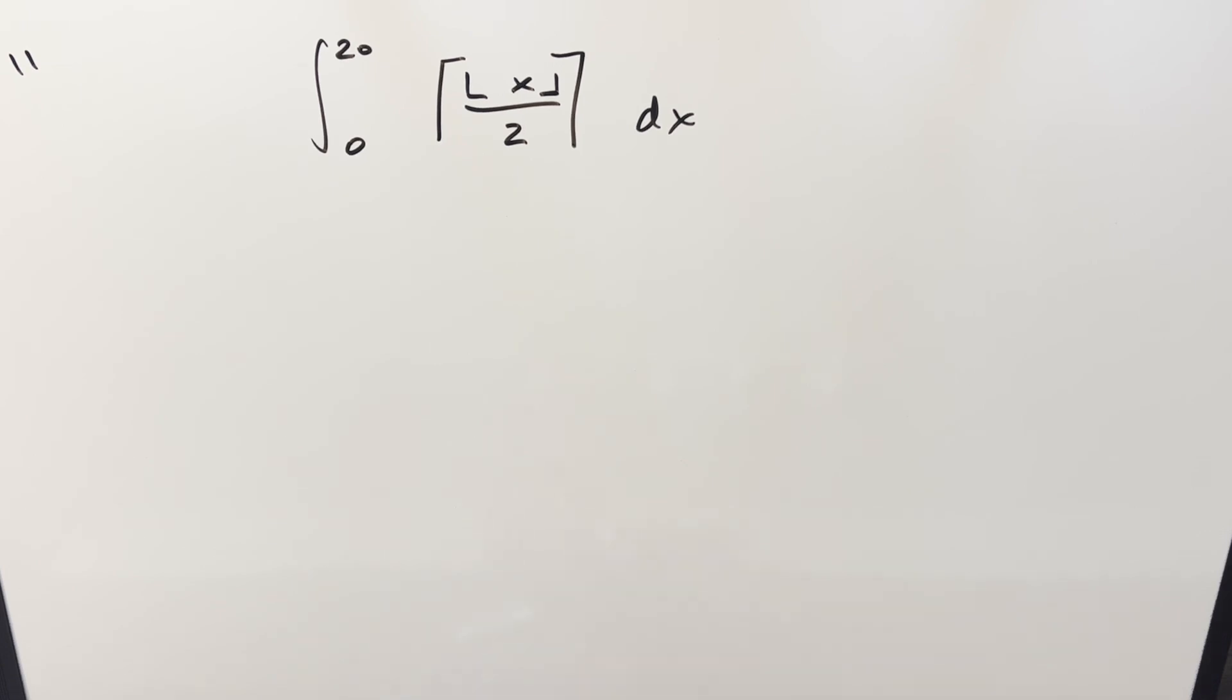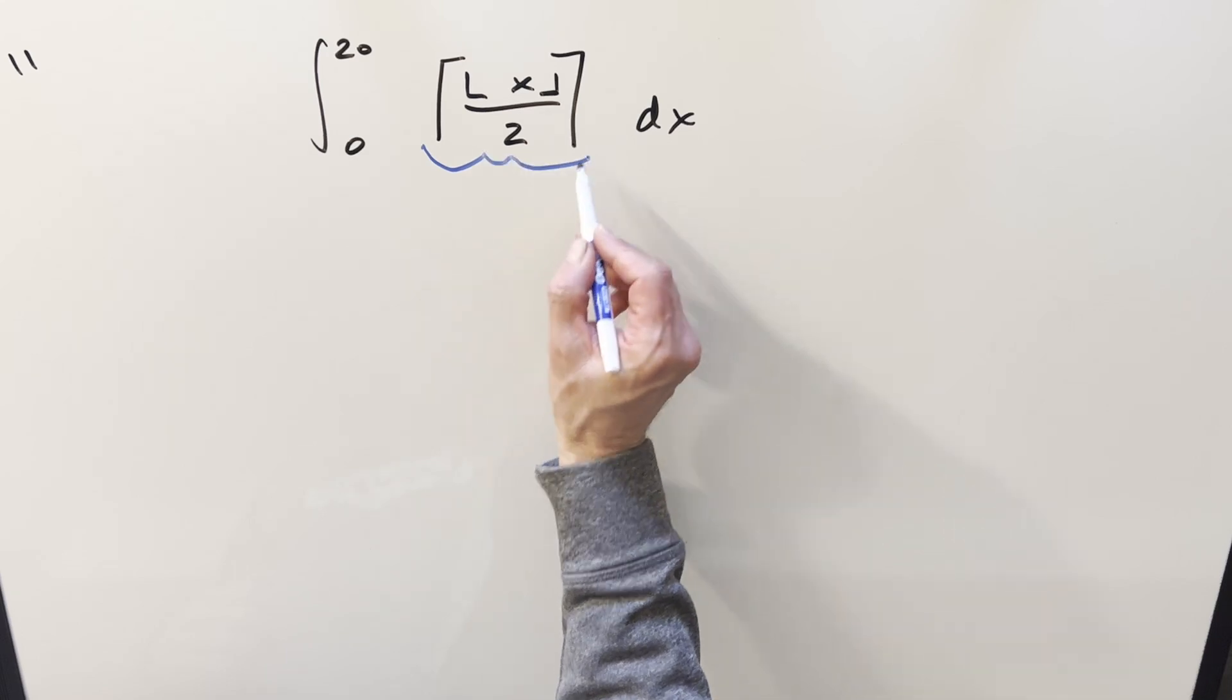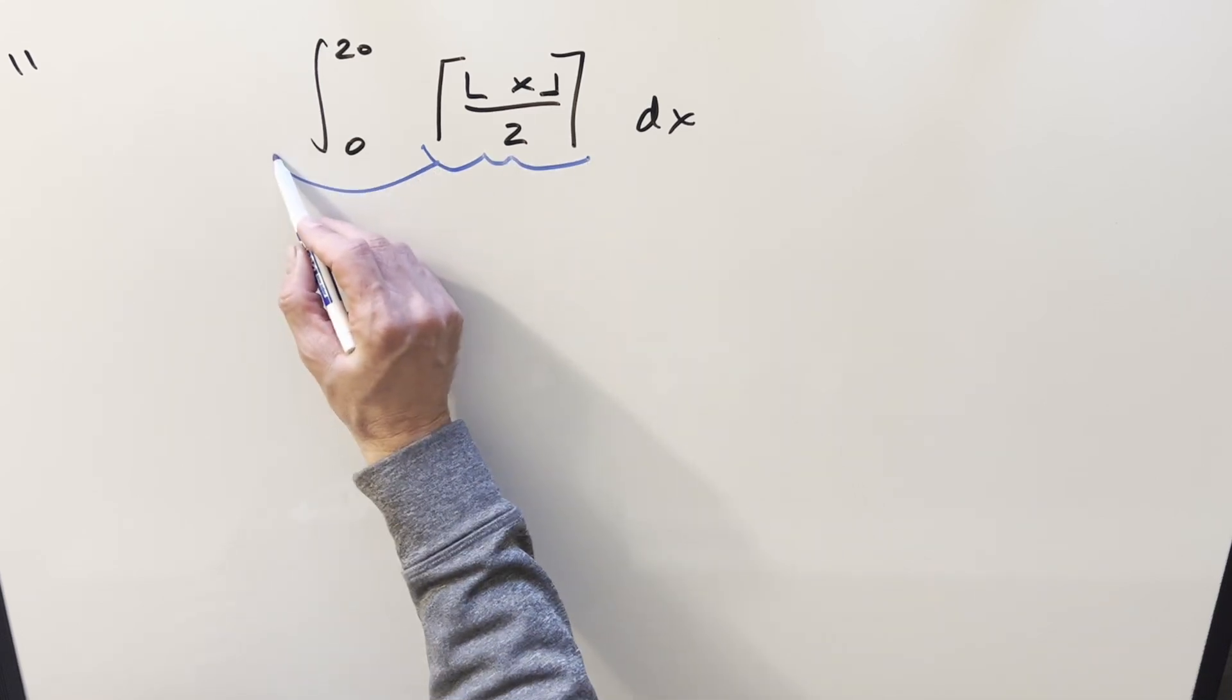To get started, we definitely want to deal with the floor and the ceiling function. The nice thing about the floor and the ceiling is it's always going to return an integer value. So we know if we break this up the right way, we're really just looking at a constant here that we can bring up front of the integral.